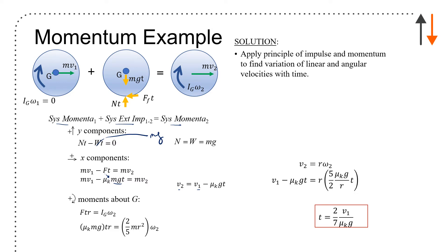If I do moments about g, the only term causing an external impulse is the friction force. So friction force times r times t equals Ig omega 2, because the initial angular momentum of the system is zero. Substituting in terms, I get mu_k times mg times t times r equals Ig for a sphere, which is two-fifths m r squared, times omega 2. So omega 2 equals five-halves times mu_k times g over r times t.